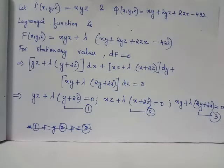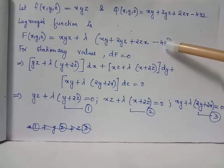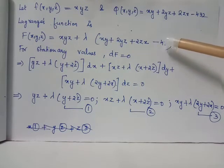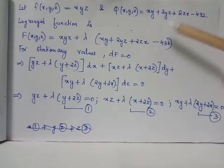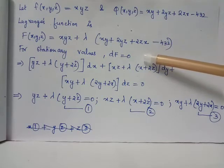Now we frame the Lagrange's function given by capital F is equal to small f plus lambda times φ. So we obtain the well-defined expression for capital F. Now we are going to find out the stationary values of capital F which is obtained by equating the first order partial derivatives of capital F to 0 or by the expression differential of F which is dF equal to 0.